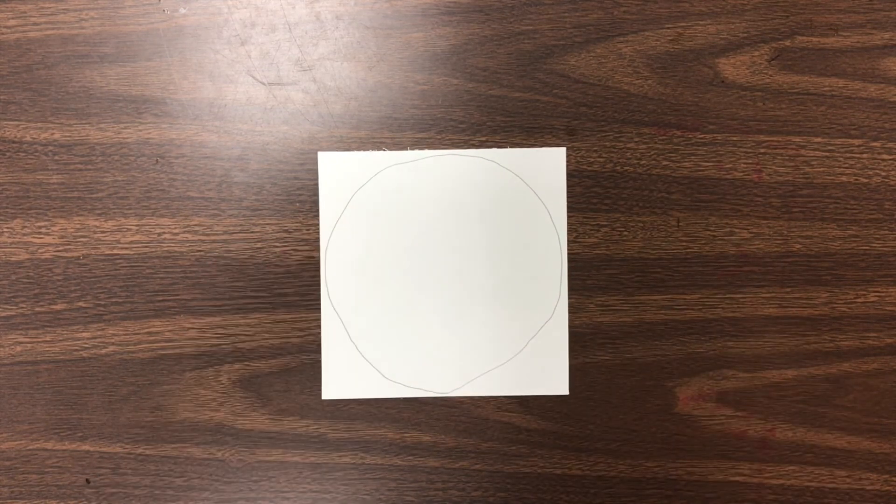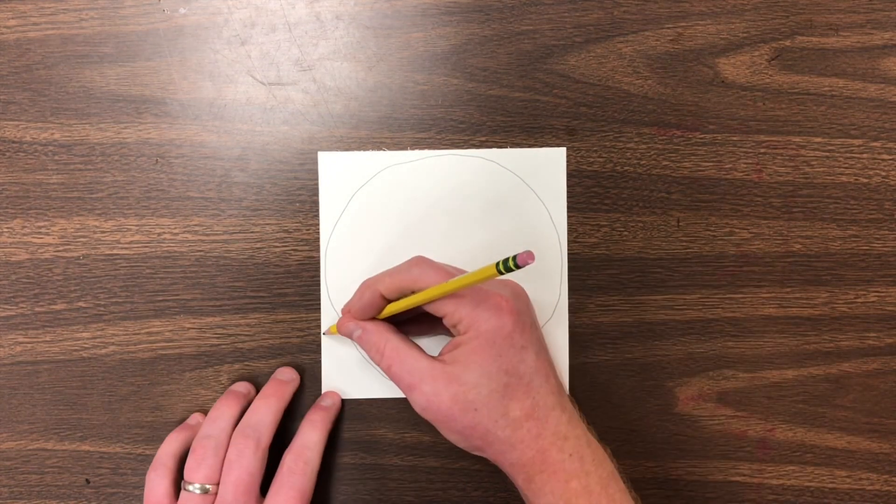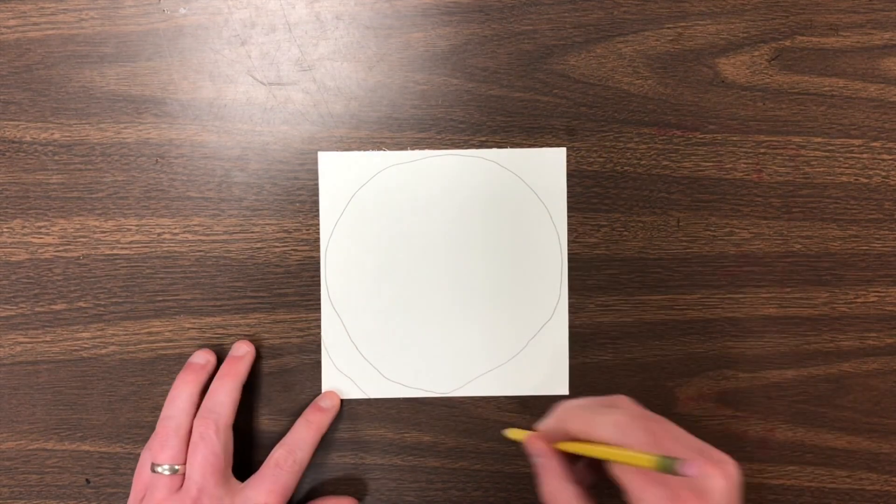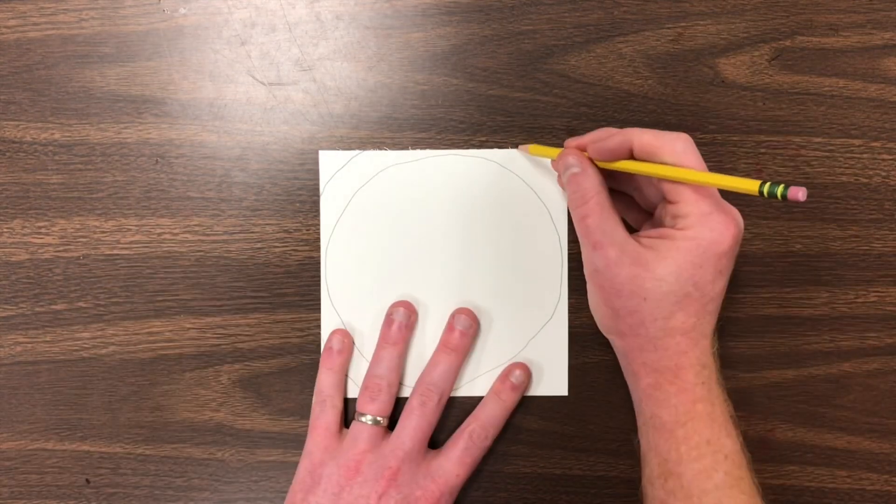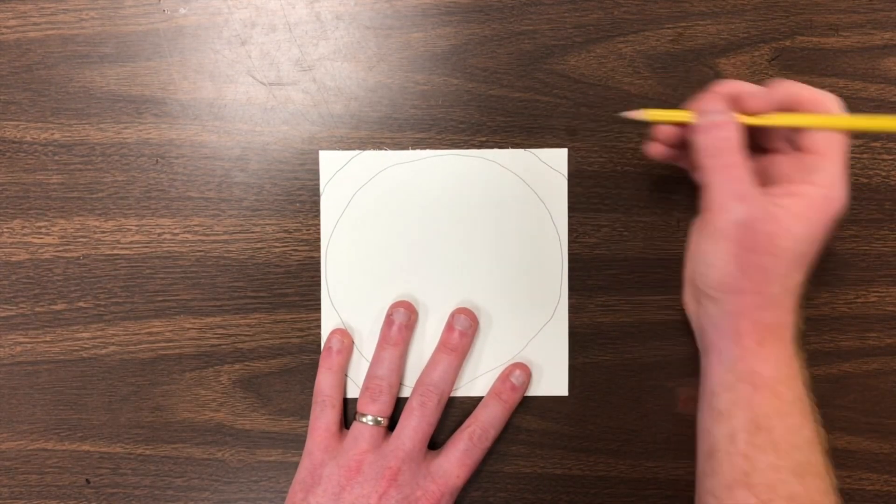Now, yours doesn't have to be perfect. Look at mine. I have some room on the outside, so I'm going to pretend that my circle goes off the page.